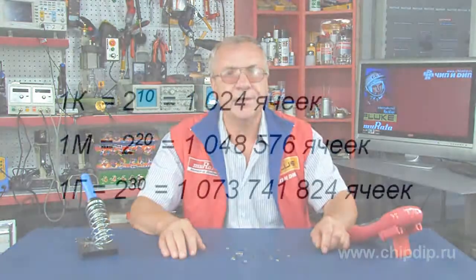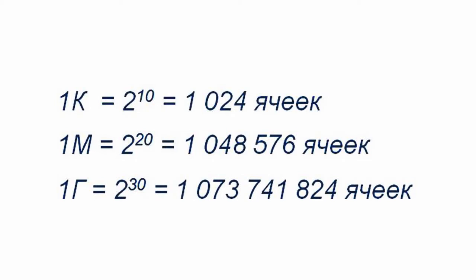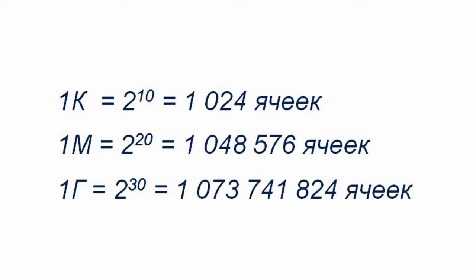The number of memory cells is normally indicated using the following measurement units: 1K is 1,024 cells, that is 2 to the 10th power; 1M is 1,048,576 cells, that is 2 to the 20th power; and 1G is 1,073,741,824 cells, or 2 to the 30th power.